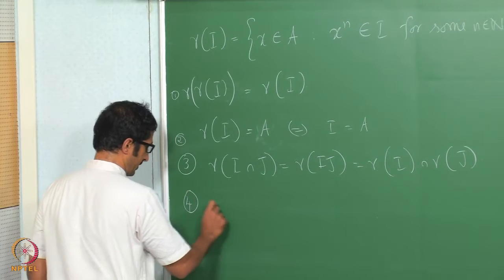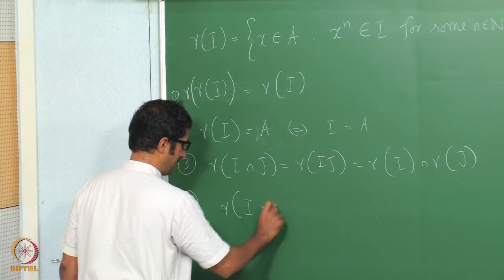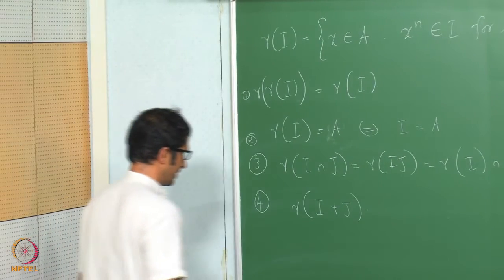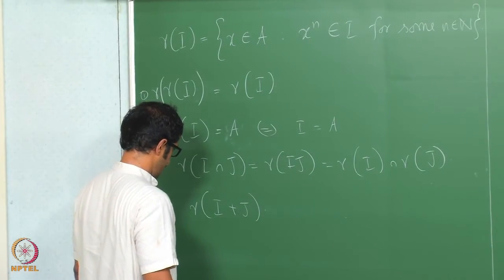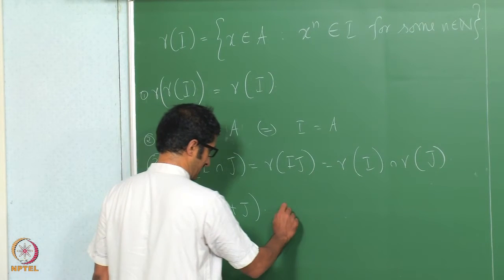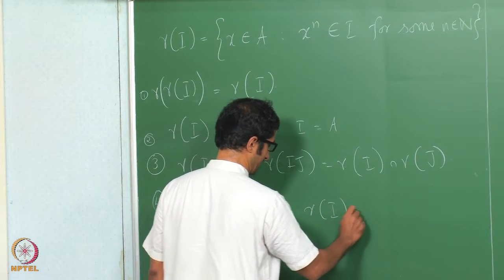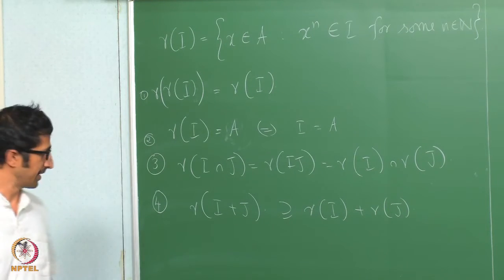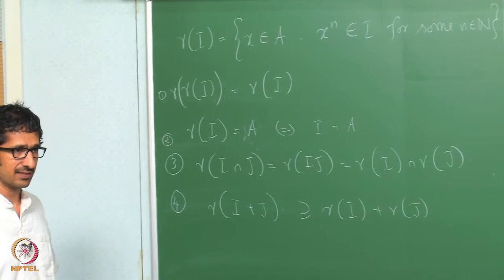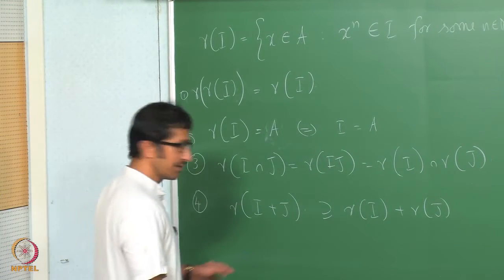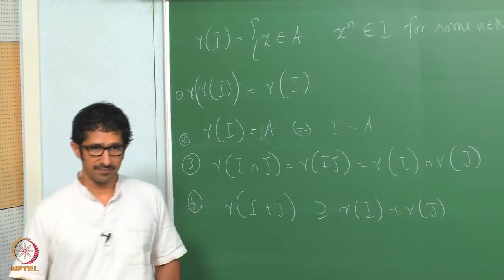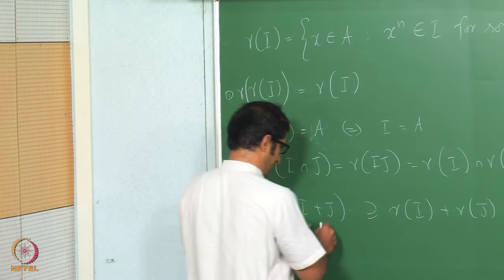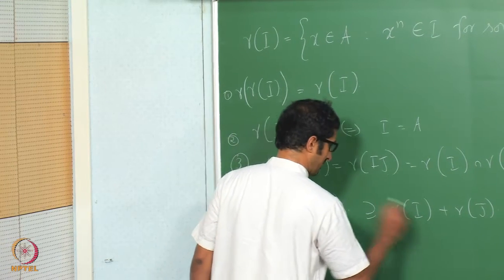Now, what can we say about the radical of I plus J? Certainly, radical of I is contained in radical of I+J, and radical of J is contained in radical of I+J. Therefore, their sum is contained in radical of I+J. The natural question is whether they are equal.